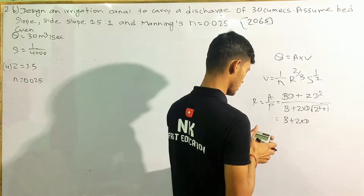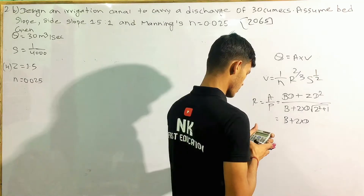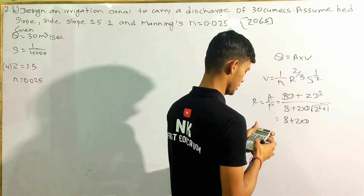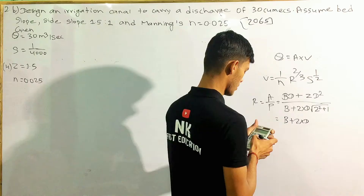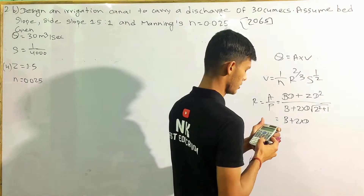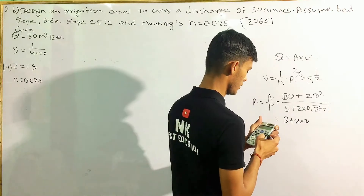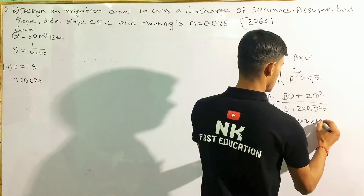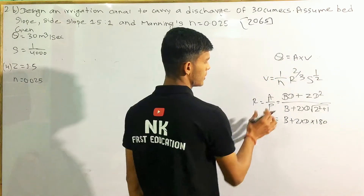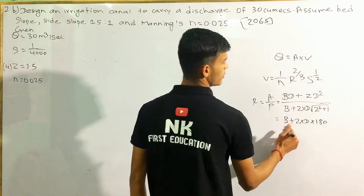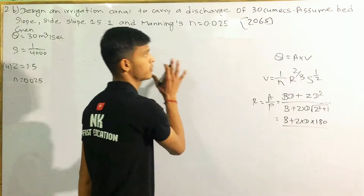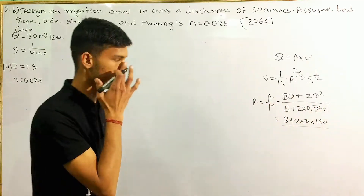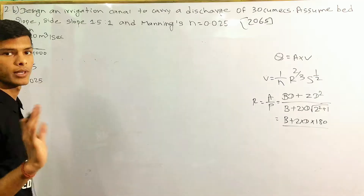So P equals √(1.5² + 1) times 1.80. This gives us the perimeter of the trapezoidal section. This is S — this is the perimeter of the channel.